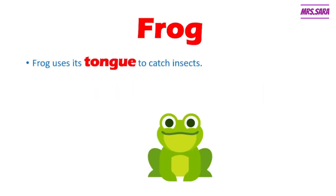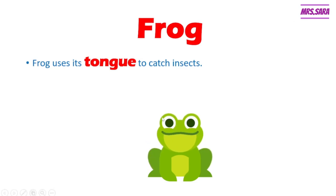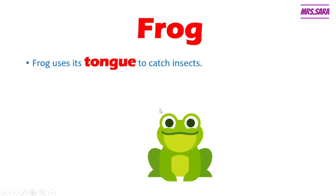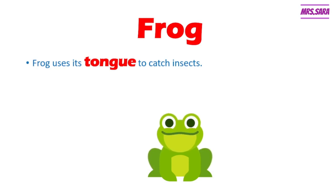Other animals also have body parts that help them, Primary 2, not only the bird. Like the frog — a frog has a tongue. Frog has tongue to catch the insect. Can you see the flies that the frog eats? So a frog uses its tongue to catch insects, the food of the frog.